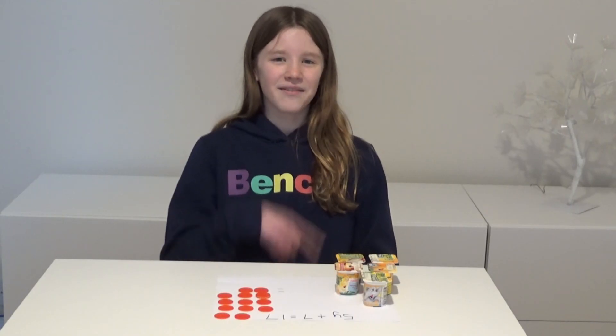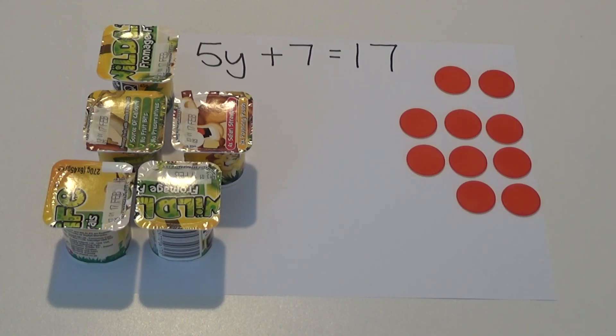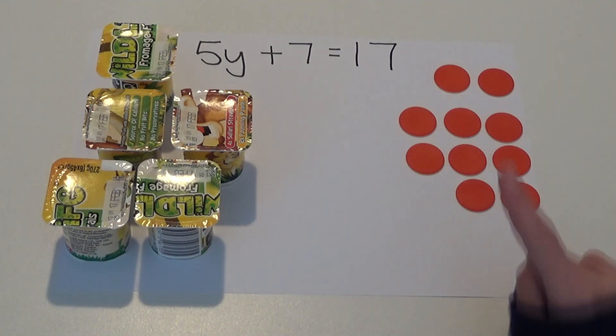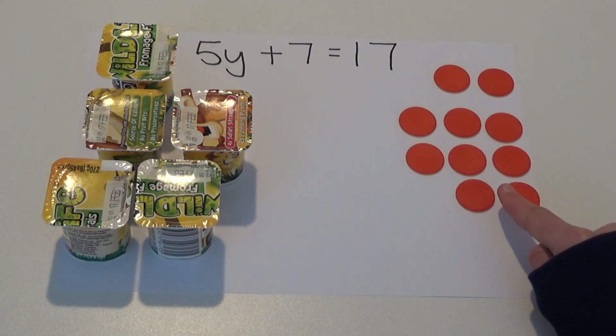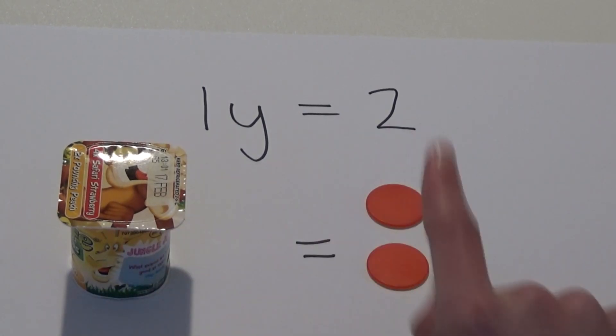We can now see that 5 yogurts is equal to 10 counters. We want to work out how many counters 1 yogurt is equal to. If we divide the 10 counters by 5, we get 2. So 1 yogurt is equal to 2 counters.